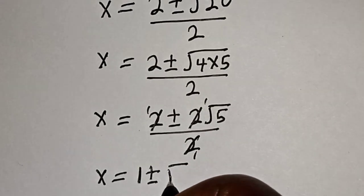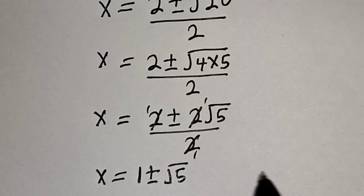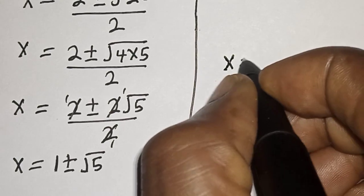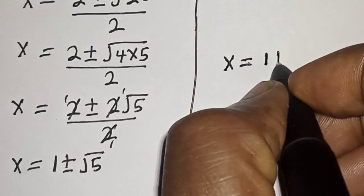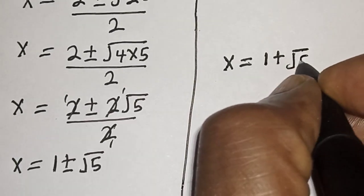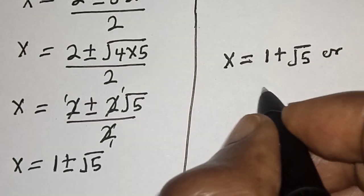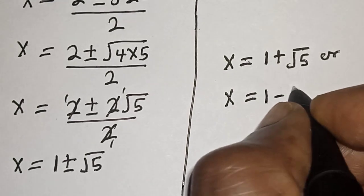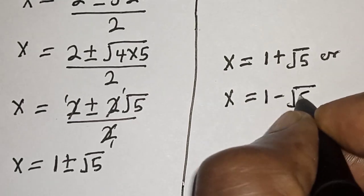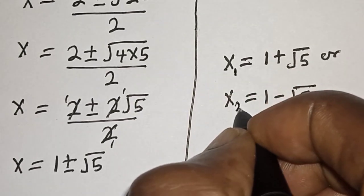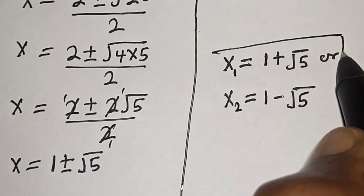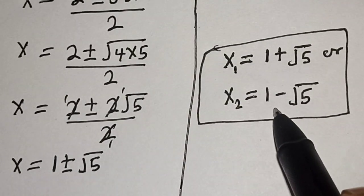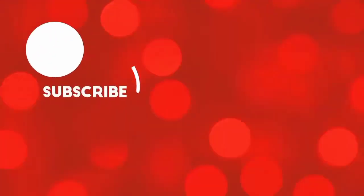My final answer: x is equal to 1 plus root 5, or x is equal to 1 minus root 5. Let's call these x1 and x2. That is our final answer. If you enjoyed the class, please don't forget to like, share, comment, subscribe, and see you in the next video. Thank you.